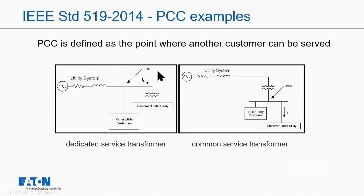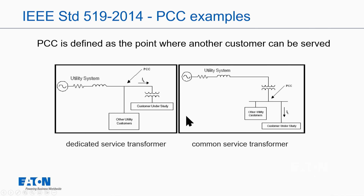This was pulled out of the 2014 standard, but it's also the same in the 2022 one. The point of common coupling is where we have a dedicated service transformer or a common service transformer. It could be either side — it just really depends on where the utility could feed another customer. The standard requires two things: you can't exceed a certain amount of total demand distortion from a current standpoint, and you can't exceed voltage harmonic distortion limits.